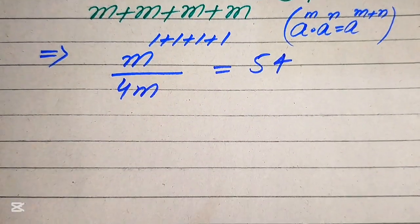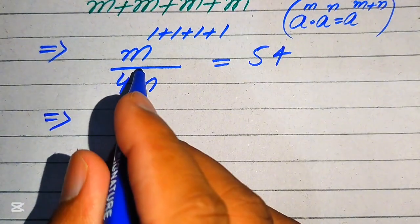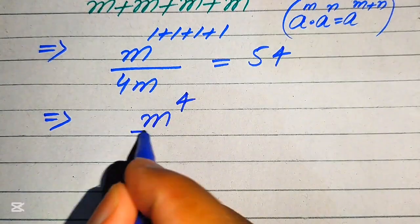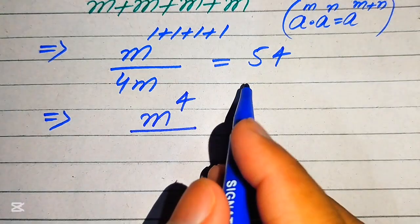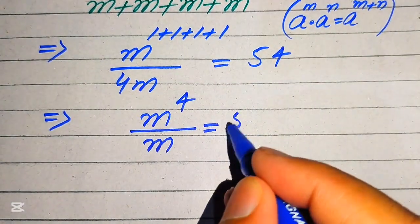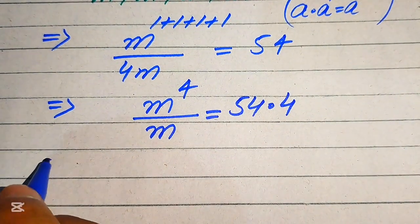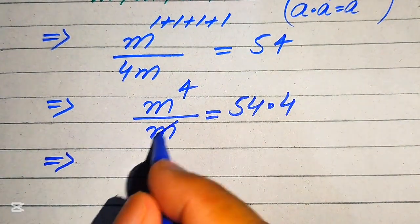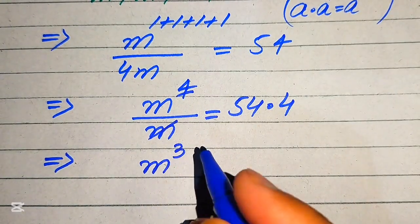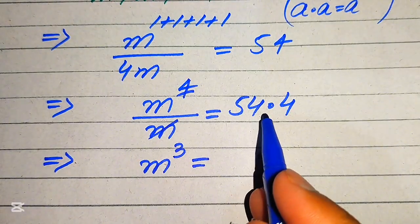Now in the next step we need more simplifications. In the numerator we have m to the power of 4, divided by 4m. We move the 4 to the right-hand side, so in the numerator we have m to the power of 4 equals 54 multiplied by 4. We see that one m cancels out, and we get m cubed on the left-hand side.